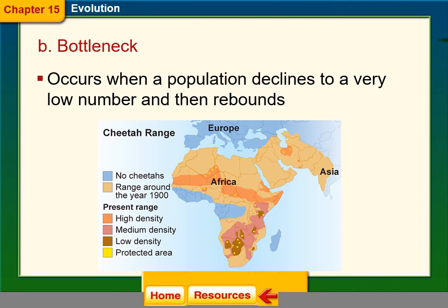Bottlenecking occurs when a population declines to a very low number and then rebounds. For example, looking at the cheetah range, we can see areas of high density, medium density, low density, and protected areas for cheetahs, illustrating how their population has contracted significantly over time.